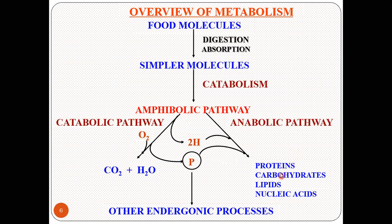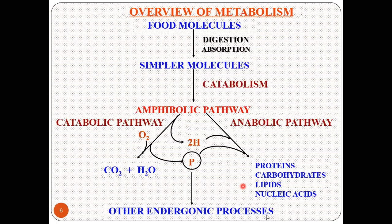Catabolism is an exergonic or exothermic process — energy is produced. The anabolic process is endergonic or endothermal — energy is used. The energy obtained from the catabolic pathway is utilized by the anabolic pathway. This anabolic pathway synthesizes protein molecules, larger carbohydrate molecules such as glycogen from glucose, and glucose from non-carbohydrate compounds through gluconeogenesis. Lipids are synthesized from acetyl-CoA through lipogenesis, and nucleic acids DNA and RNA are also formed — this is termed anabolism.